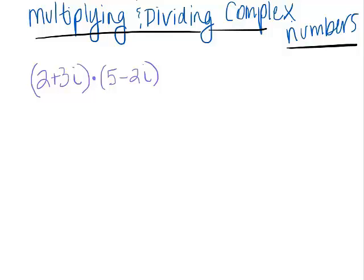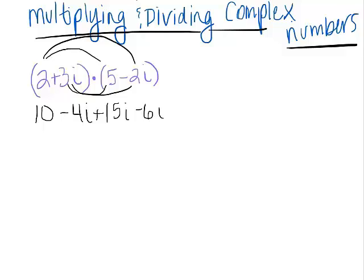We know how to multiply two binomial expressions. We have to use that kind of double distribution. So we can multiply the 2 times the 5, we get 10. 2 times negative 2i would give us negative 4i. 3i times 5 gives us positive 15i. And positive 3i times negative 2i is negative 6i squared.